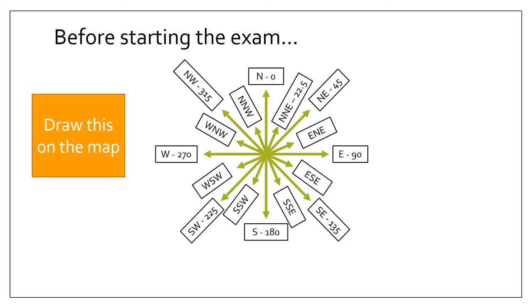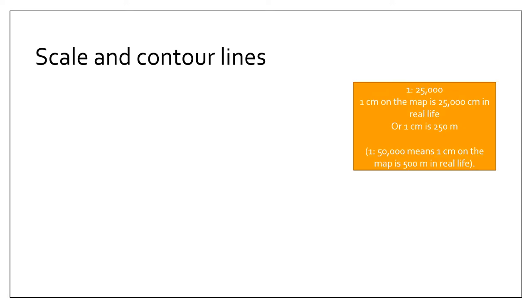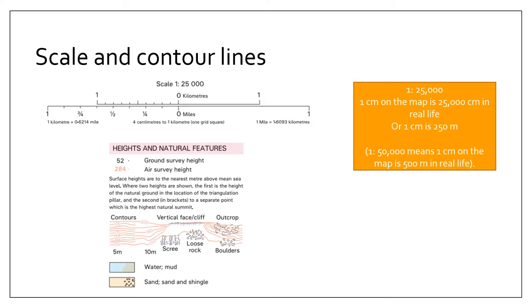Before you start answering the questions, it's always good to circle and identify the scale and the contour line interval. On this particular map the scale is 1 to 25,000, meaning one centimeter on the map equals 250 meters. Another common scale is 1 to 50,000, where one centimeter equals 500 meters. Also look in the key to identify the contour line interval — here when they're really close together they're every 5 meters, and when further apart, 10 meters.